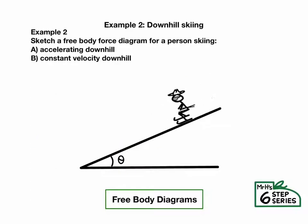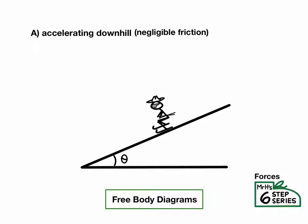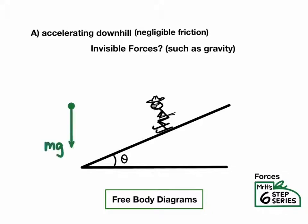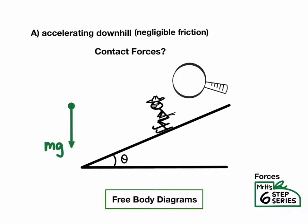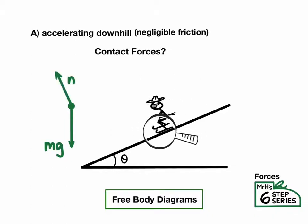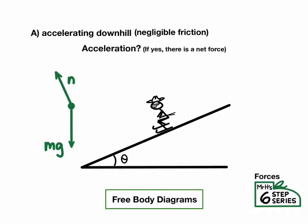Let's consider a skier accelerating downhill. While accelerating downhill, let's consider invisible forces — yeah, we're going to have gravity. And then contact forces: we should have normal force from the surface. And if we're accelerating, we should have unbalanced forces. And we do. So the diagram checks out.